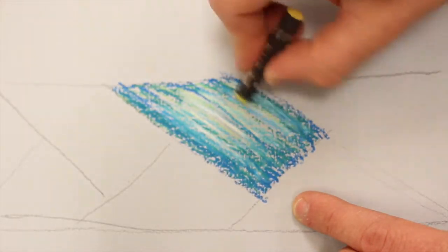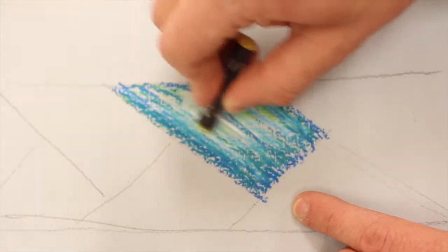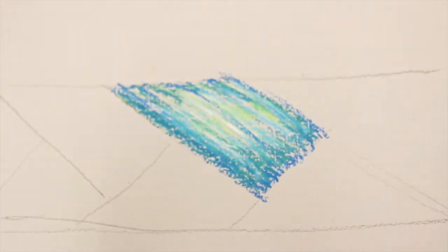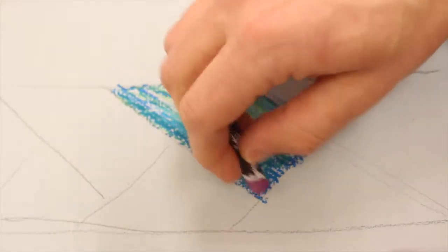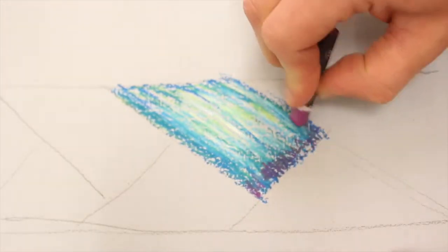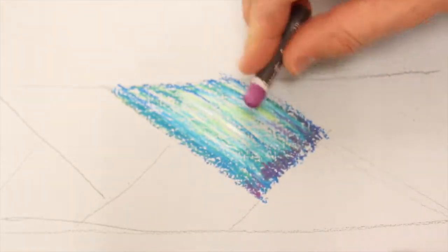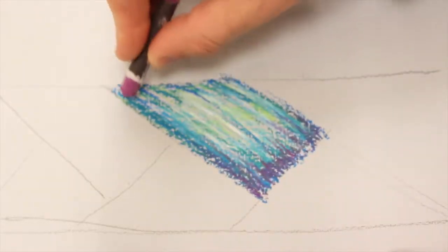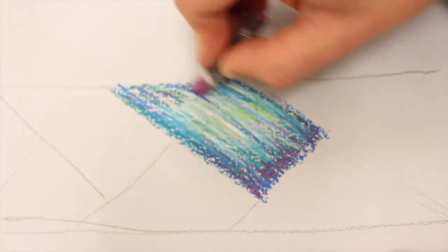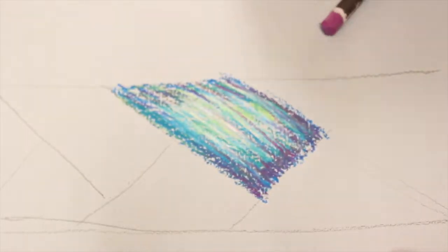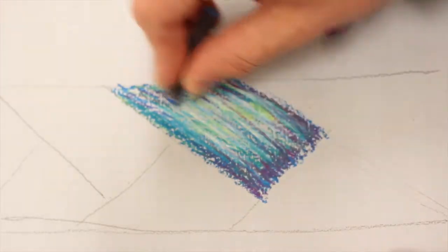I'll add maybe just a hair of yellow right in the middle, and then for the final part here I'm going to add my purple. Once again I'm going to kind of go back and forth between my darkest spots and my brightest spots. This doesn't quite look like there's hair so I'm going to kind of come back in.